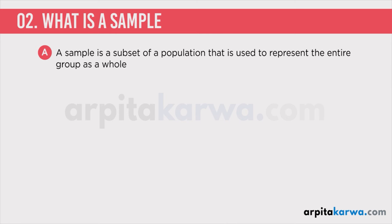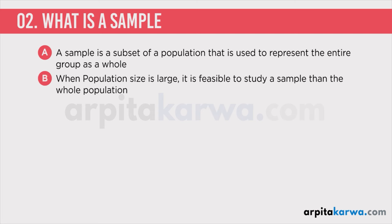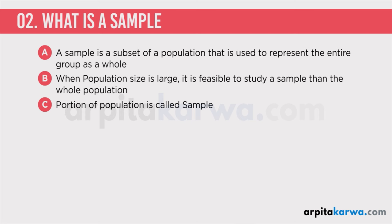When doing research, it is often impractical to survey every member of a particular population because the sheer number of people is simply too large. In all these scenarios, we pick people from the population and conduct research on them. If you ask me to give a simple definition of sample, I would say that when gathering information about a certain population, it's easiest to take a portion of that population — known as a sample — and conduct research on this smaller group to draw conclusions about the whole population.